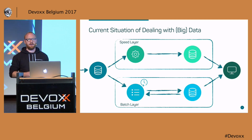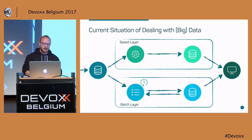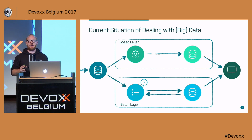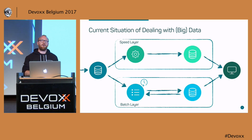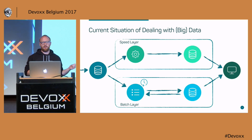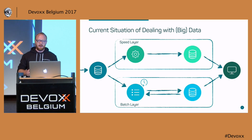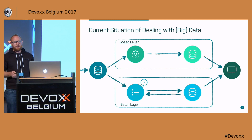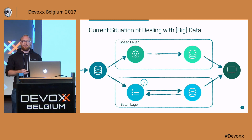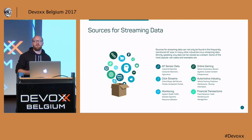The lambda architecture existed because streaming results weren't considered fully correct. That was the main reason for separating the two layers. But as streaming technology matured, this differentiation became less necessary.